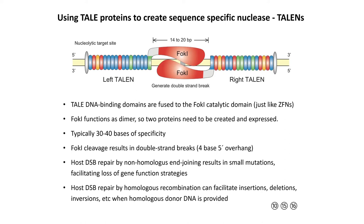The kinds of breaks created by both zinc finger nucleases and TALENs have a four base five prime overhang — that's just what FokI does. It doesn't create a blunt end; it creates a five prime overhang. You could use those overhang sequences in some strategies, but it does mean that those breaks are a bit more mutagenic, because non-homologous end joining in general will remove that five prime overhang, and so you'll end up with deletions.